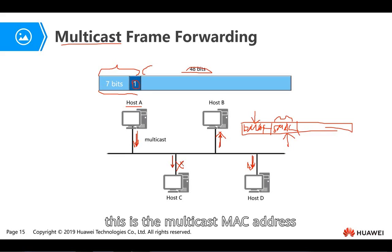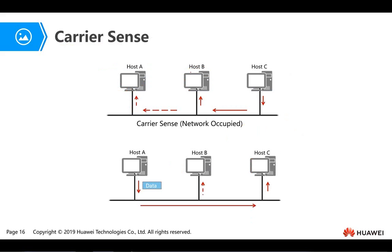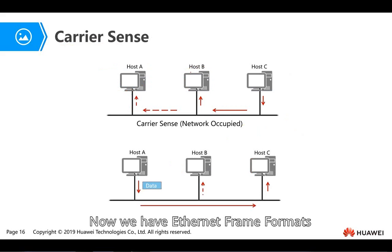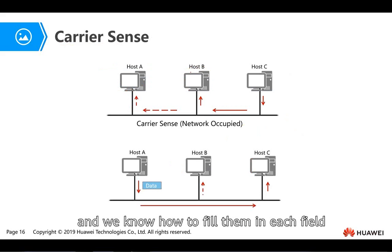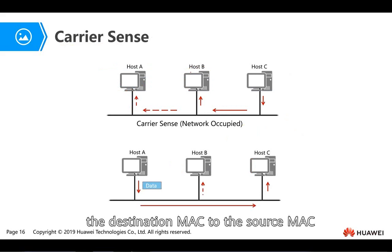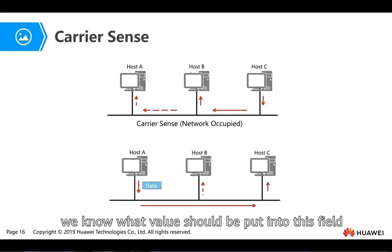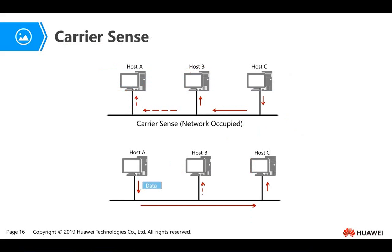This is the multicast MAC address. Now we have the Ethernet frame format and know how to fill in each field: the destination MAC, the source MAC, and the type field. We know what values should be placed in each field, and how the data is sent from one computer to another.